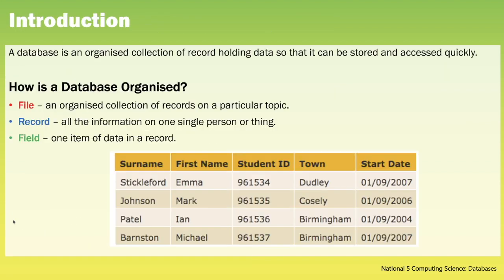Before we get into the crux of database design and development it is important to understand what a database is. A database is an organised collection of records holding data so that it can be stored and accessed quickly. There are three main parts to a database. The file — this is an organised collection of records on a particular topic.